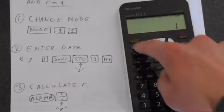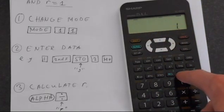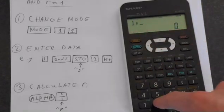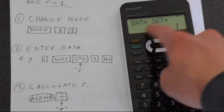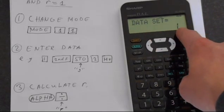So we'll just do that. So 1, 2nd function, STO. See, that gives us a comma there. Then 2. Now we'll press M plus. The data set now consists of 1 entry.